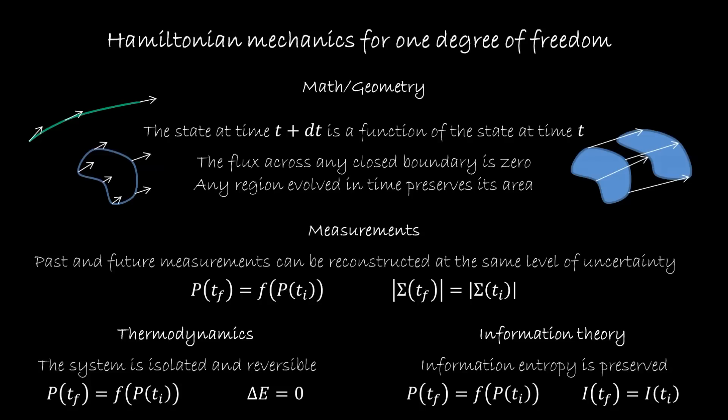So now we have seen another way to see Hamiltonian mechanics for one degree of freedom. In terms of the math, it preserves the area, in measurements it preserves the uncertainty, in thermodynamics we preserve the entropy, and for the information theory, the information entropy is what gets preserved. And it's nice to see that all these elements are equivalent.